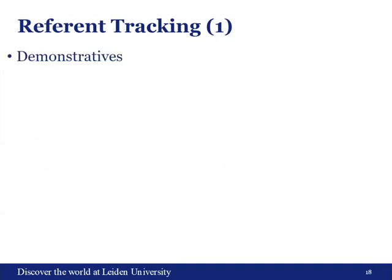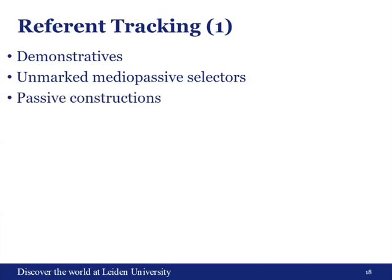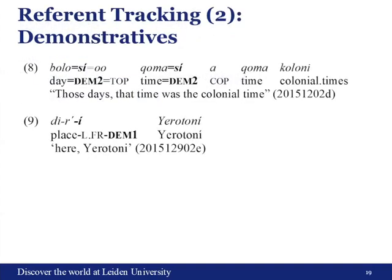Moving on to reference tracking. The main way of tracking reference is using demonstratives — it's very prevalent, happening in almost every sentence. Then you have unmarked medial passive selectors and passive constructions. Demonstratives can be used to establish reference in a narrative. For example, in example 8, the topic is given as a day and a time, and note that this is marked with the topic marker.